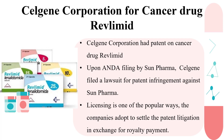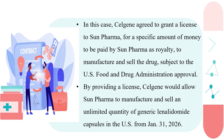In another case between Celgene Corporation and Sun Pharma, Celgene Corporation had a patent on Revlimid. Upon an ANDA filing by Sun Pharma to manufacture a generic version of the drug, Celgene filed a lawsuit for patent infringement against Sun Pharma. In this case, Celgene agreed to grant a license to Sun Pharma for a specific royalty amount, to manufacture and sell the drug subject to USFDA approval. By providing this license, Celgene would allow Sun Pharma to manufacture and sell an unlimited quantity of the generic version of this drug in the US from January 31st, 2026.